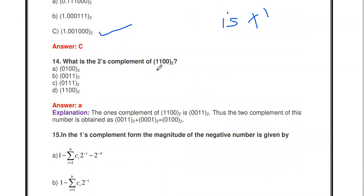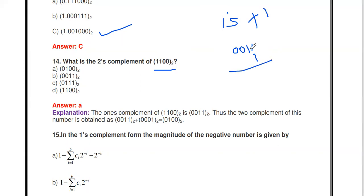What is the two's complement of 1100? First, take one's complement of 1100: replace 1s with 0s and 0s with 1s, giving 0011. Then add 1 to the one's complement: 0011 + 1 = 0100. So the two's complement of 1100 is 0100.